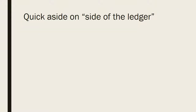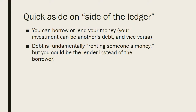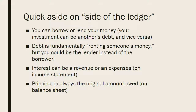A quick aside: whether something is an asset or debt depends on perspective. You could borrow money or you could lend money — in one situation you have debt, in another you have an asset. If debt is fundamentally renting someone's money, you could also be the lender and rent your money out to others. Interest can be interest revenue or it could be an interest expense, and that will be on your income statement. The principal amount borrowed or lent, however, is on the balance sheet.